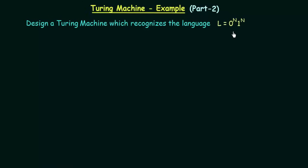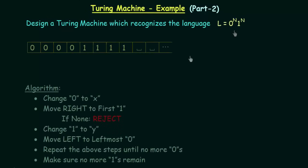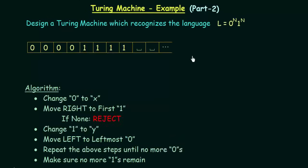This particular language is not a regular language. We shall see in this example, using a Turing machine, how we can design this language. First of all, I will explain the algorithm of how this can be done. We will design an algorithm which will be able to accomplish this task of accepting this kind of strings, and then from this algorithm we will see how we can design the equivalent Turing machine.